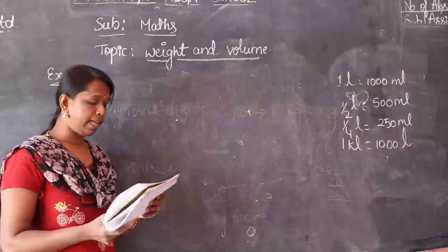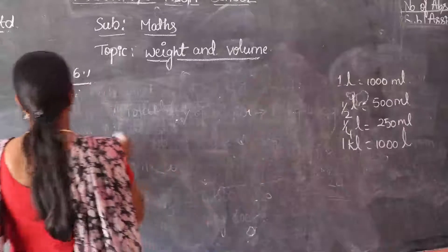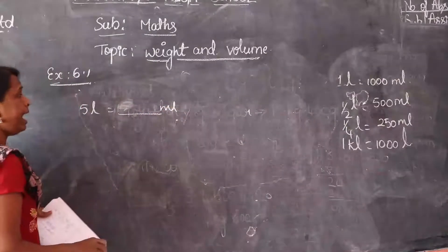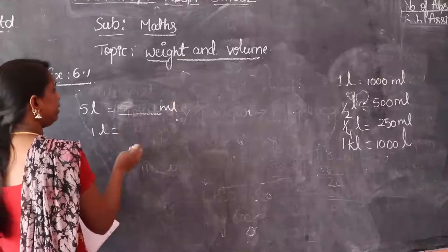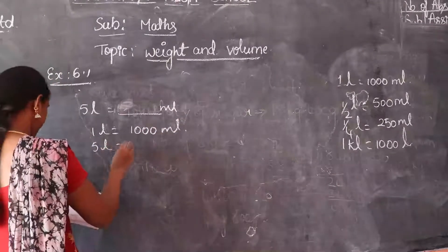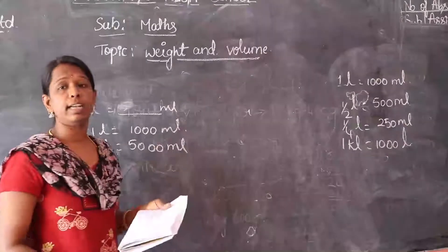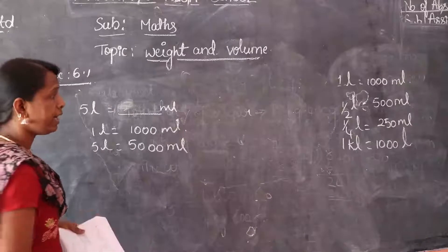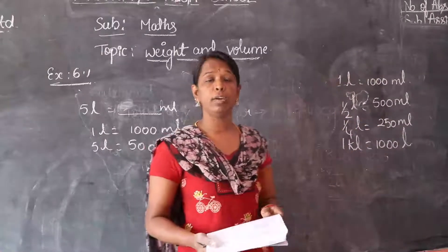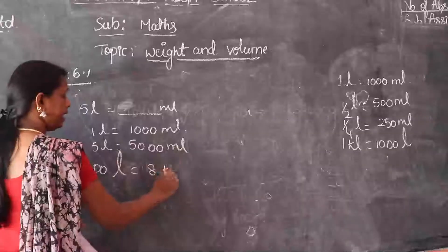Exercise number 6.2 — convert the following. 5 litres is equal to 5000 millilitres, since 1 litre equals 1000 millilitres. 1 kilolitre is equal to 6000 litres. 500 ml is equal to half litre. 8000 litres is equal to 8 kilolitres.